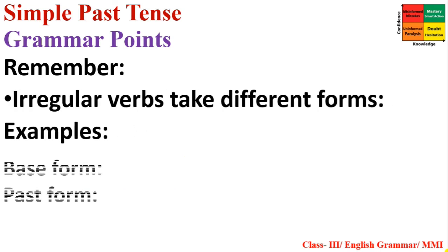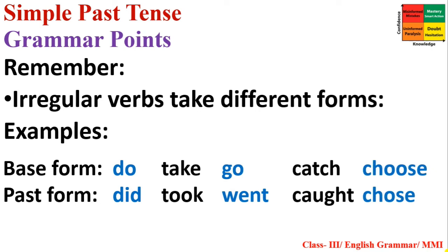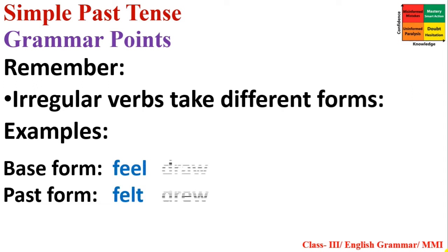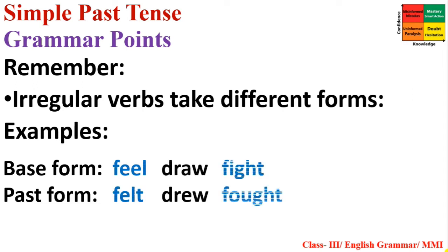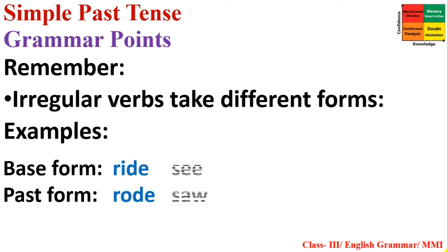Irregular verbs take different forms — no -ED is used; the words simply change. Base form → past form: do → did; take → took; go → went; catch → caught; choose → chose; feel → felt; draw → drew; fight → fought; lay → laid; mean → meant; write → wrote; see → saw.